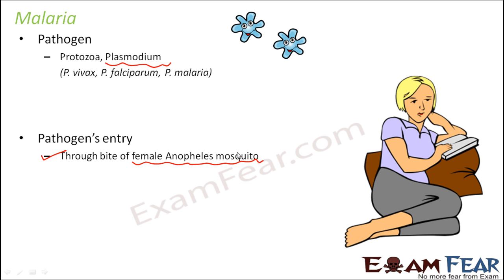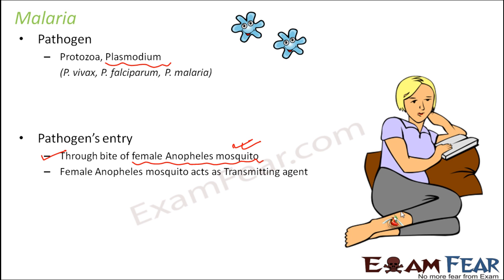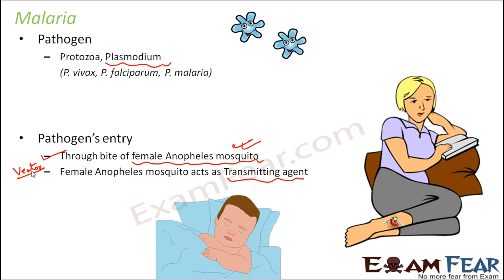The mosquito acts as the transmitting agent. Here you can see a lady sitting and reading a book — it is possible that this mosquito is a female Anopheles mosquito, and while it bites the lady it will inject plasmodium inside her body. The female Anopheles mosquito acts as the transmitting agent, often known as the vector. An organism that helps in spreading the disease from one person to another is called a vector. In the case of malaria, the female Anopheles mosquito is the vector.